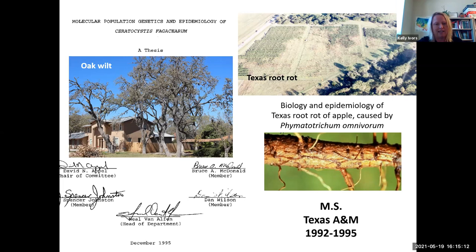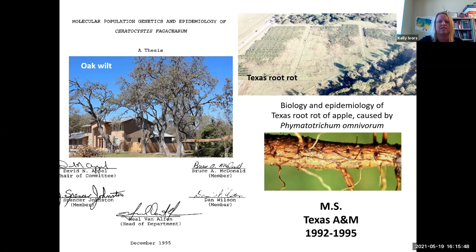For my master's I focused on two diseases. I worked on oak wilt, which is really problematic in parts of Texas where they do cattle grazing because the trees provide shade. Then there was an opportunity in another lab to work on a disease called Texas root rot, at that time called Phimatatricum — now Phimatatricum Opsis. I worked on an apple disease in what was the most southern apple production region in the United States.